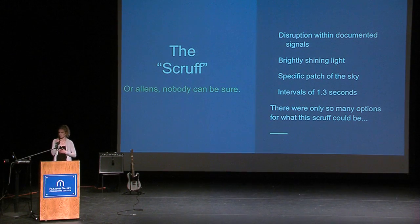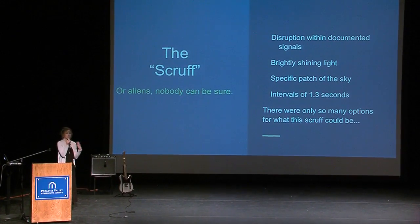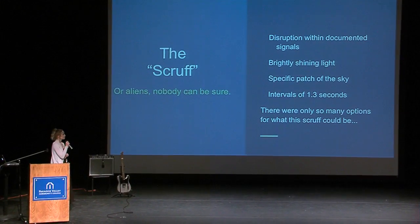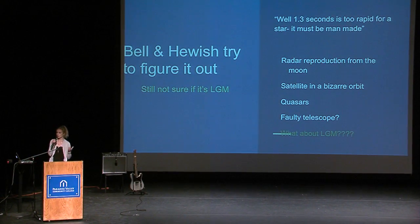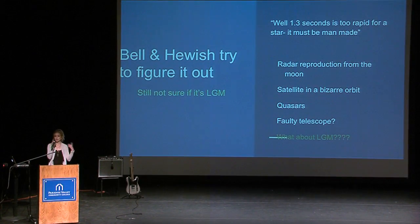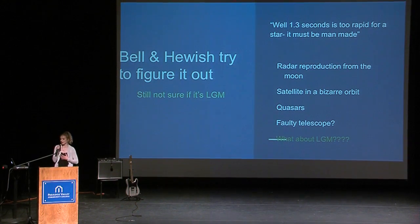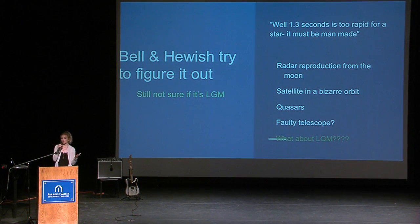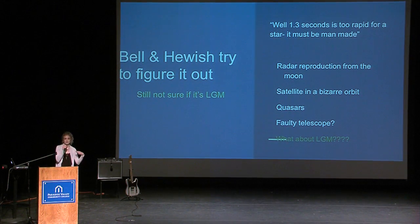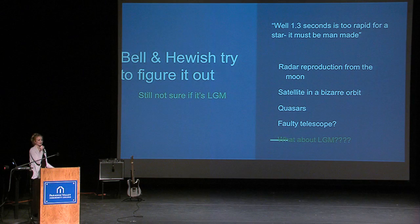This scruff — they didn't really know what it was. It was disruption within the documented signals, and it showed as a brightly shining light in a specific patch of the sky with intervals of exactly 1.3 seconds. Bell talked to her professor Hewish, who said 1.3 seconds is too rapid for a star, given that the mass of a star is much too large to rotate every 1.3 seconds — so it must be man-made. They looked over several options: radar reproduction from the moon wasn't an option, a satellite in a bizarre orbit wasn't an option, they even considered quasars, and they even considered that the telescope they were using might have been faulty. They also considered LGM — little green men — so aliens were even an option.